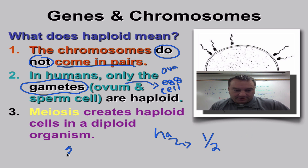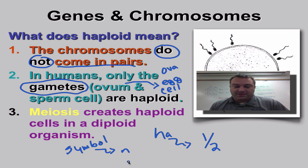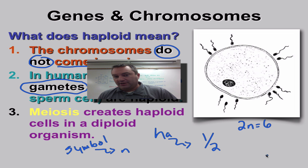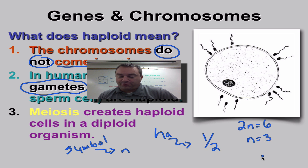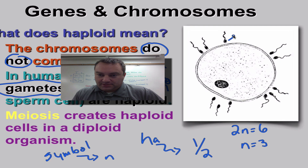The symbol for haploid is just n. I use a lowercase n; your textbook likes uppercase — it doesn't make any difference. Going back to where we had 2n equals six as the diploid number with six total chromosomes, if you just do algebra, n is going to equal three. So the haploid number would be three.